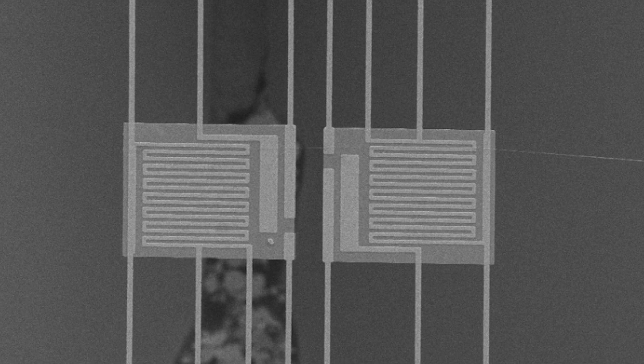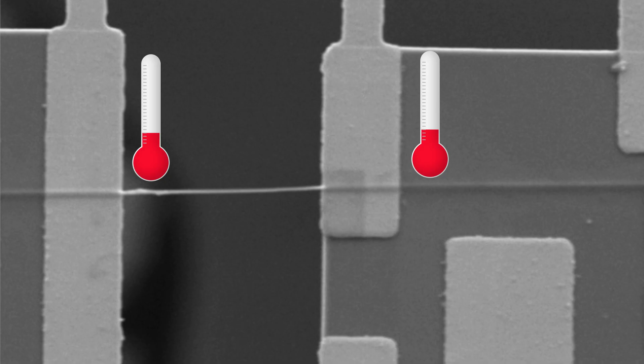In this device there are two suspended platforms. These platforms can act as a heater as well as a sensor. The nanowire is placed between these suspended platforms and one of the ends is heated up.